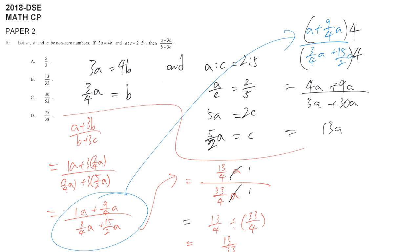So that's why I got 13a over 33a, cancel out a, I got the answer.